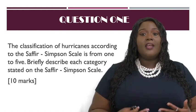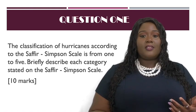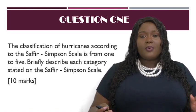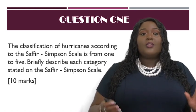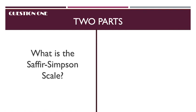Question one asks us to briefly describe each category stated in the Saffir-Simpson scale, which ranges from one to five. Let's break this question down. We can divide it into two parts: part one is all about the Saffir-Simpson scale itself — what it is and defining related aspects — and part two is where we describe each category on the scale.